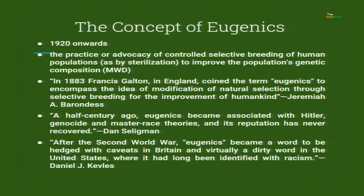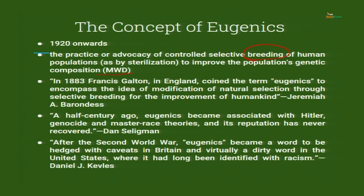Let us first understand the word eugenics. According to Merriam-Webster's dictionary, it is the practice or advocacy of controlled selective breeding of human population. We must understand what is meant by breeding of human population and how it differs from reproduction. Reproduction is a natural process with no controlled purpose, whereas the word 'breed' has an animal-like connotation — we use it for domestic animals like dogs, cats, and cows.